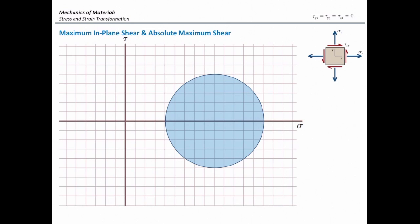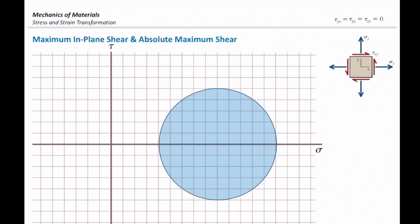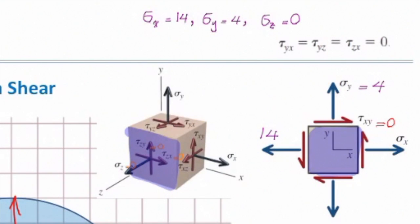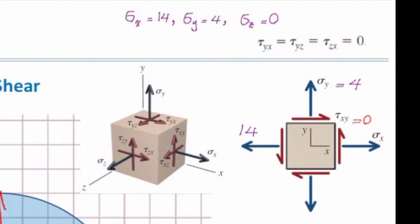Let me consider this two-dimensional stress element. I assume that sigma in the x-direction is σx, sigma in the y-direction is σy, and there is a shear stress. We can draw Mohr's circle for that, which is shown here. However, we know that two-dimensional stress elements come from three-dimensional stress elements. We assume that σz is zero, τyz is zero, and τzx is zero. In that case, I can simplify this three-dimensional stress element to this two-dimensional stress element.